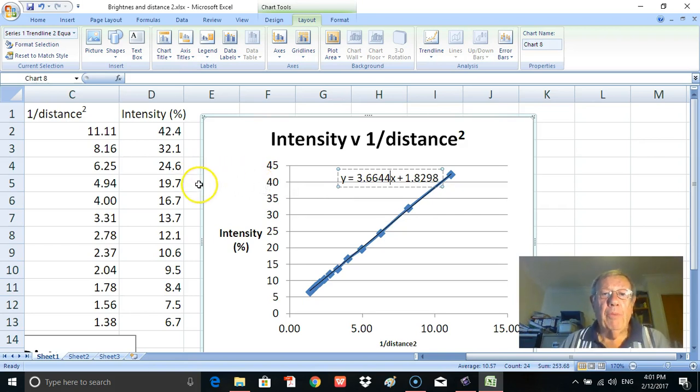So what we have shown here, as I mentioned, is that we do have a relationship, a clear relationship between intensity and 1 over the distance squared. Now that relationship is referred to as the inverse square law.